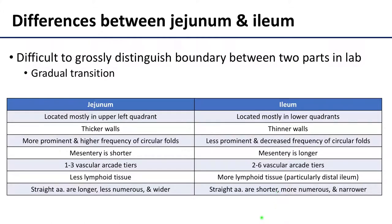There is no grossly visible line of demarcation between the jejunum and the ileum, but there are observable differences that are often more pronounced in the more proximal portions of the jejunum and the more distal portions of the ileum. Now I know that tables can be overwhelming, but I think you will thank me in the end for having these differences broken down. So let's go over some of the higher yield concepts first. For the most part, the jejunum is located in the left upper quadrant, while the ileum is going to be in the lower quadrants, particularly the lower right quadrant.